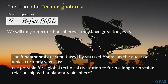If there are very long-lived civilizations, we should be able to find some. If they're always short-lived — meaning a thousand years or less — I'm talking technological civilizations that leave a technological mark on the planet the way we are now, if they're always short-lived, then we won't be able to detect them. So the fundamental question of SETI is very much connected to the fundamental questions we're asking about ourselves now: is it possible for a global technical civilization to form a long-term, stable relationship with a planetary biosphere?